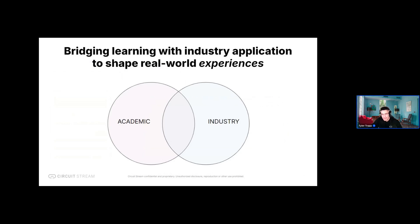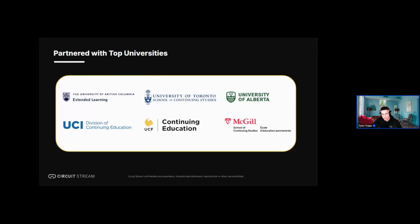At Circuit Stream, our main goal is to bridge academics with industry to shape real-world experiences and teach the skills of the future through innovative learning experiences. We achieve this through project-based learning. When we design our curriculums, we begin with employer data and research, and based on that we create experiences and projects to provide our students with career-ready skills.